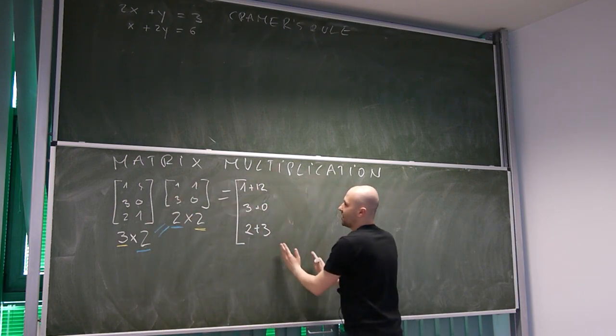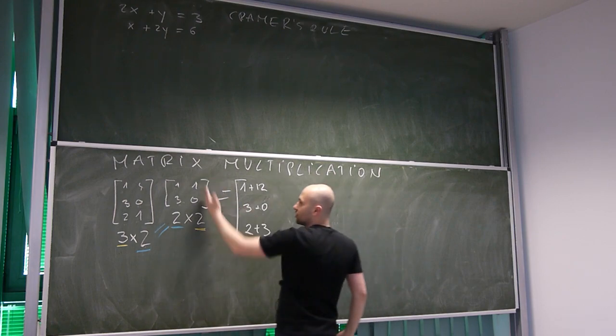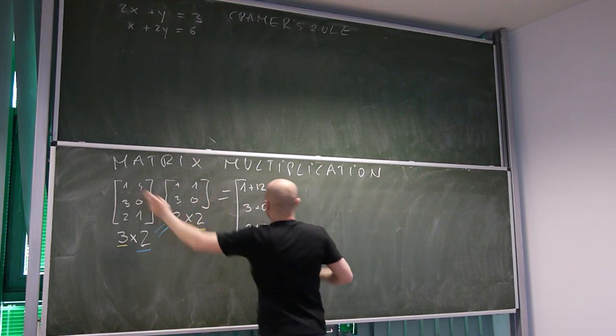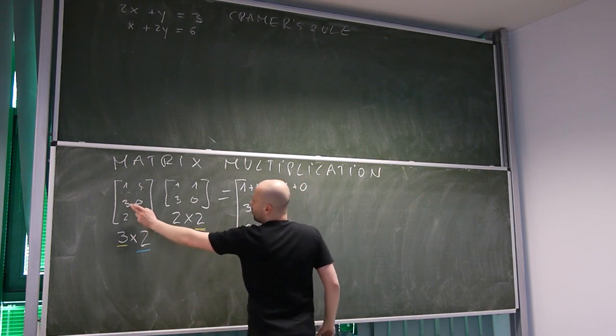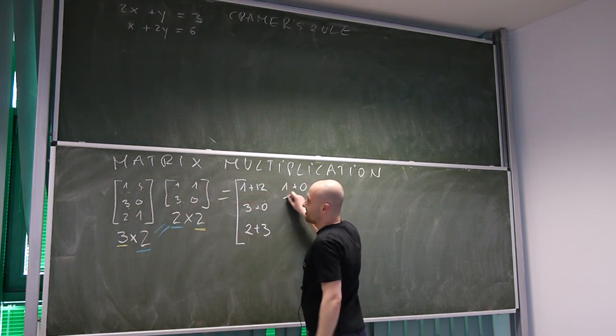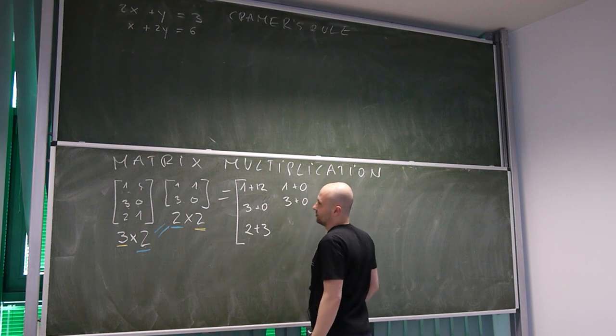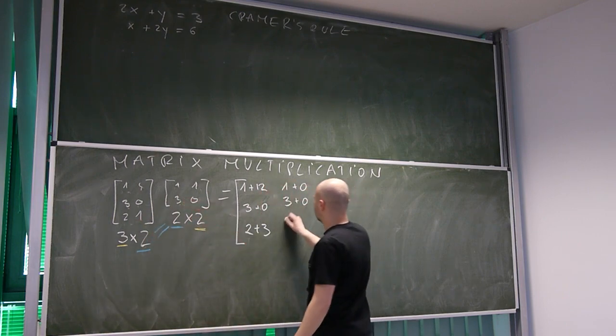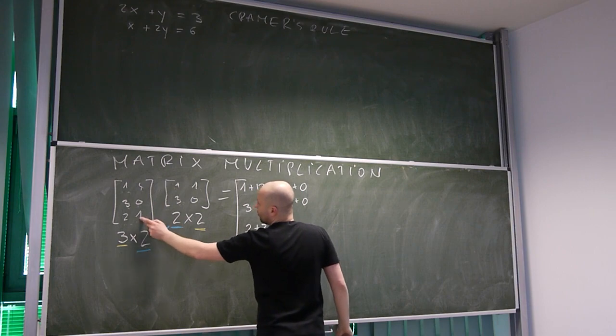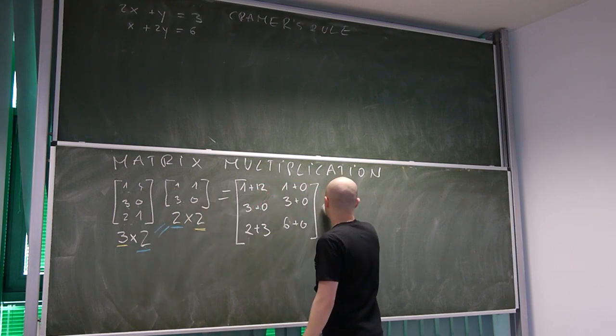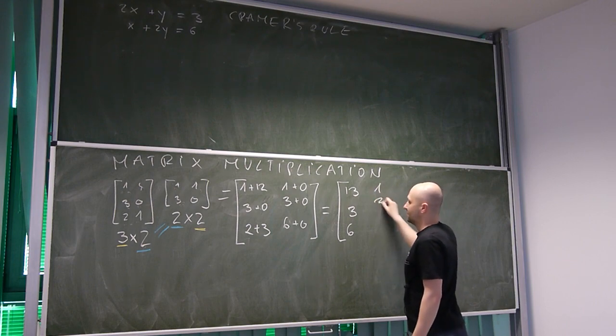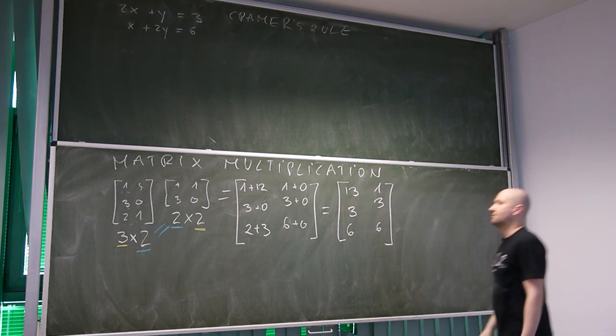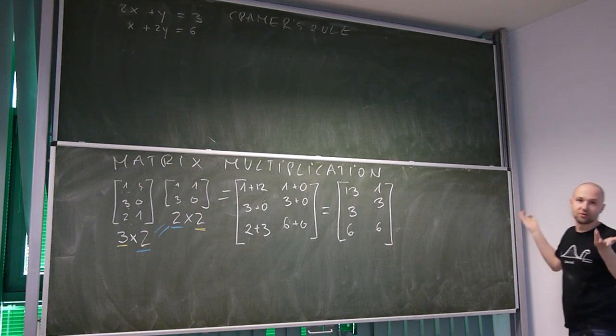And then, we need to calculate elements in a second column. One times one is one, plus four times zero is zero. Three times one is three, zero times zero is zero. Two times three is six, one times zero is zero. So the answer is 13, three, six, one, three, six. And this is it. This is how we multiply two matrices.